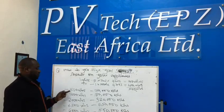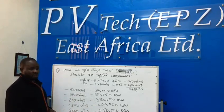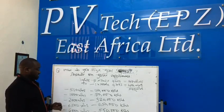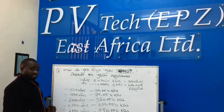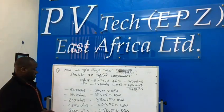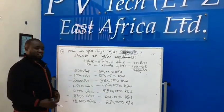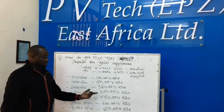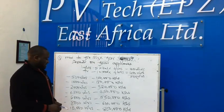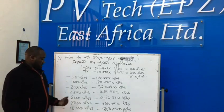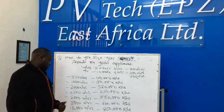If you have a system with 500 watt-hours, you are expected to spend approximately 150,000 Kenyan Shillings for that project. If you have 1,000 watt-hours, a project can go for about 180,000. A 2,000 watt-hour project can go to about 320,000, and a project that is about 4,500 watt-hours is about 450,000 Shillings.